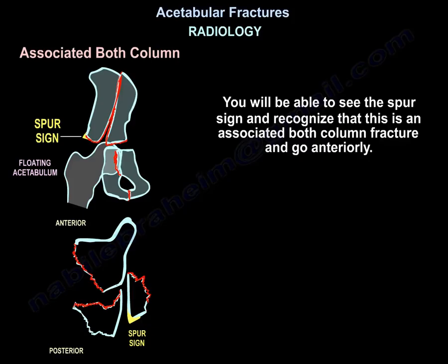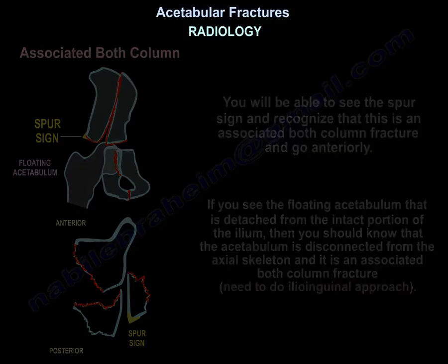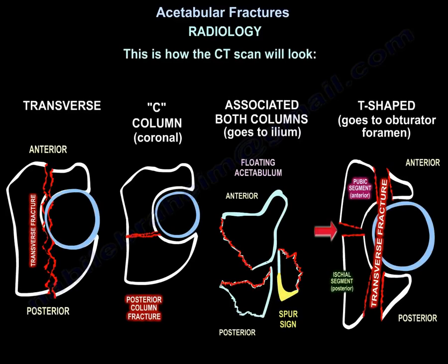If you see the floating acetabulum detached from the intact portion of the ilium, the acetabulum is disconnected from the axial skeleton — this is an associated both column fracture and you go ilioinguinal. On CT: transverse fracture appears sagittal, column fractures appear coronal. When it extends to the ilium, it is associated both column. When it extends to the obturator foramen involving the inner wall of the acetabulum, it becomes a T-fracture.